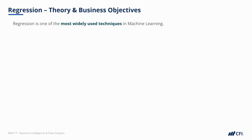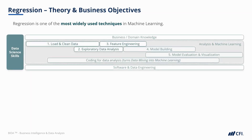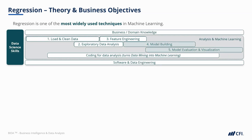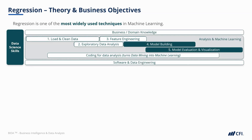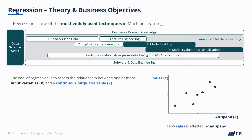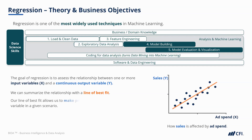Regression is one of the most widely used techniques in machine learning. Within the machine learning process, our regression model fits into the model building and model evaluation phase. The goal of regression is to assess the relationship between one or more input variables and a continuous output variable, and we can summarize that relationship with a line of best fit.